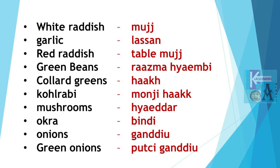Haak. Kohlrabi is Monjahak. Monjahak. Mushrooms are Header. Header. Okra is Bindi. Bindi.